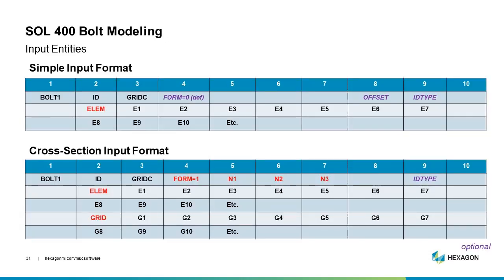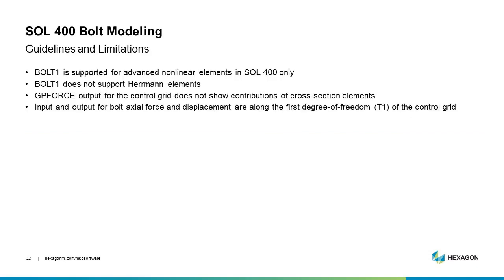The bolt one entry did not change. For the simple input format, the user gives the grid ID, form equal zero, and the complete list of elements. For the cross section format, form equal one requires the normal direction, elements on one side, and the list of grid points. Guidelines and limitations: bolt one is supported for advanced nonlinear elements only in SOL 400; it does not support Herman elements inside bolts; GP force output for the control grid does not yet show contributions of cross section elements; and pretension forces are always applied in the first degree of freedom of the control grid, aligned along the bolt axle direction.